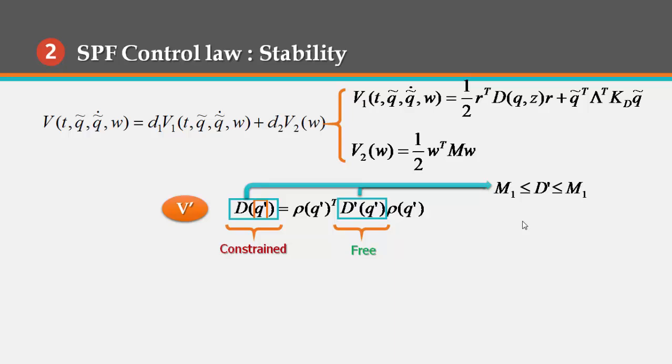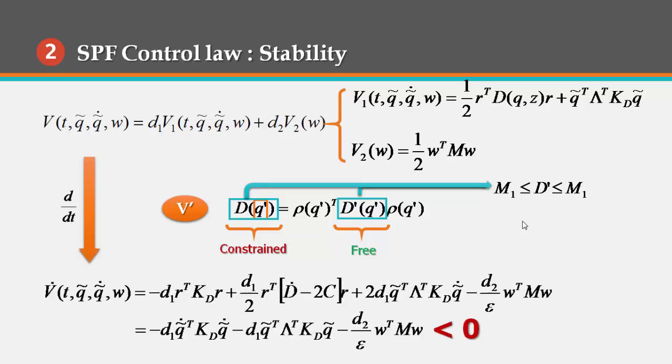Well, evaluating the time derivative of V along the trajectory of the closed loop system shows that V is decreasing over time. Hence, the equilibrium of the closed loop system is locally asymptotically stable.